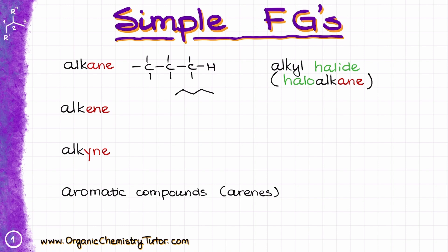One other thing I want to mention: whenever in organic chemistry we say that something is R — like the rest of the molecule — we typically mean a simple alkyl chain, which is going to be a simple alkane without any specific functional groups or any additional chemistry relevant to us.